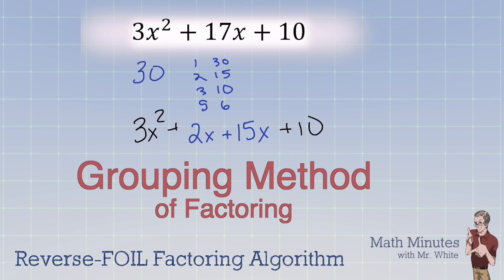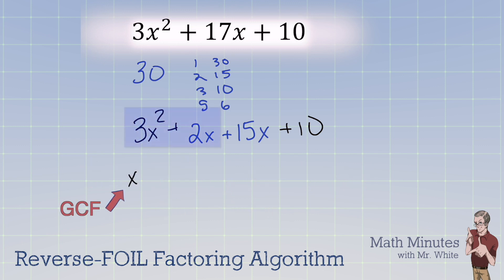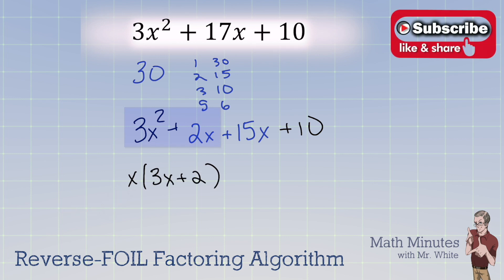We look at those first two and we take out the GCF. The GCF on the first two is x. That leaves behind 3x plus 2 inside a parenthesis. Now turn your attention to the last two terms, and the GCF there is 5. And that leaves behind 3x plus 2.